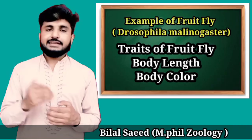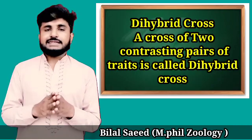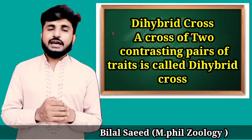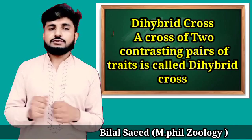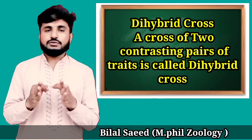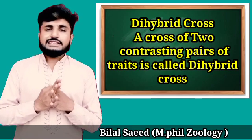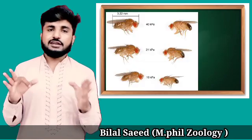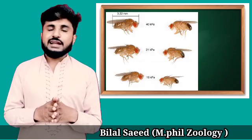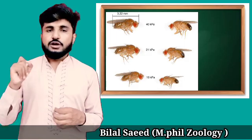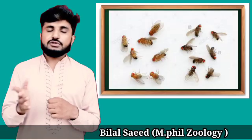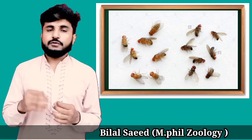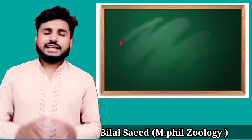When we talk about the Second Law of Independent Assortment, it is a dihybrid cross. A dihybrid cross is a cross in which we compare two contrasting pairs. We can take one body length which is short or long. These are two traits which we use while proving our law.